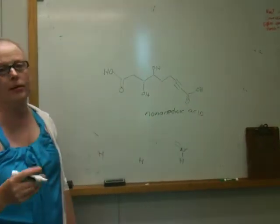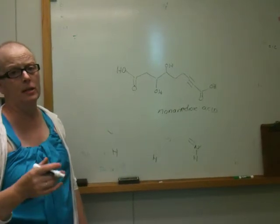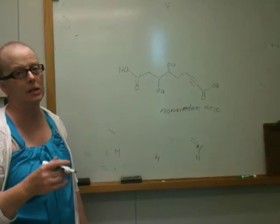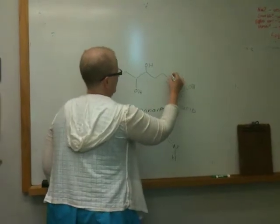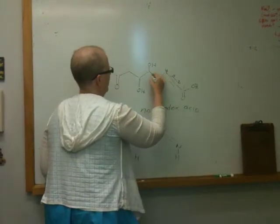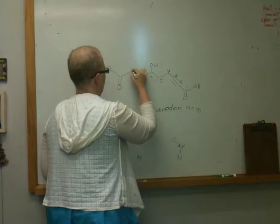Because remember, your second priority is always to incorporate double bonds and triple bonds, and to give double and triple bonds the lowest numbers. So the numbers should go in this direction, 1, 2, 3, 4, 5, 6, 7, 8, 9.